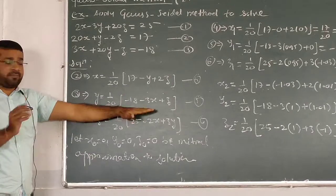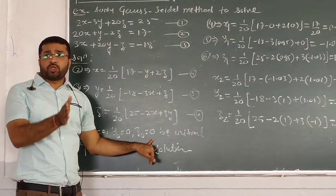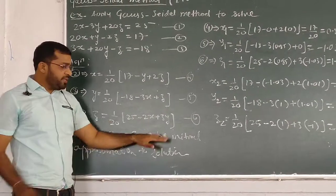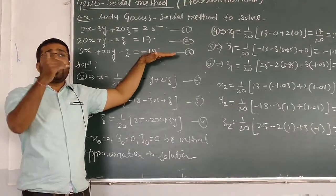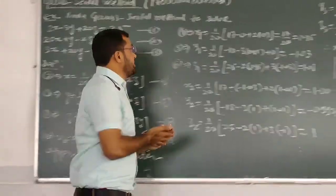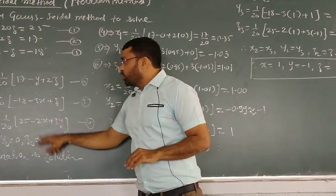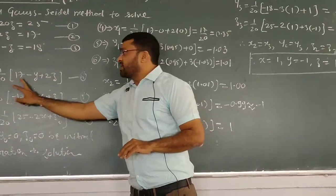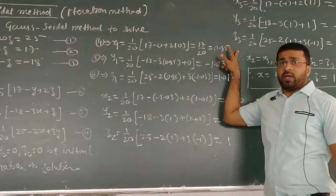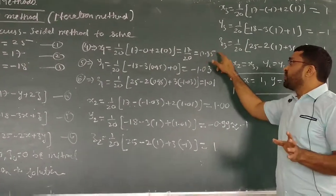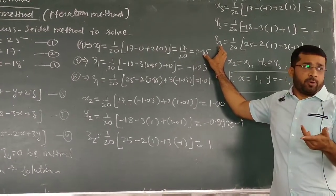With the three rearranged equations established, we set the initial approximation as x = 0, y = 0, z = 0. Substituting into the x-equation gives x1 = 17/20 = 0.85. We round to two decimal places throughout the calculation.